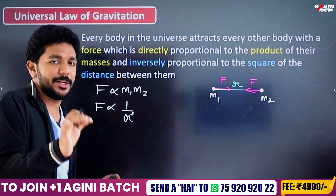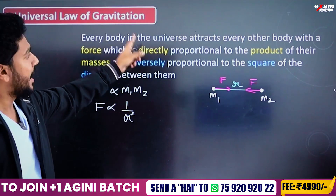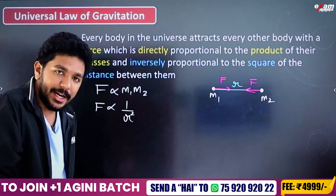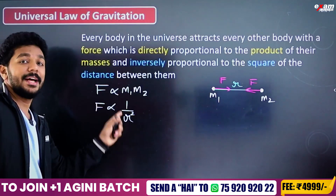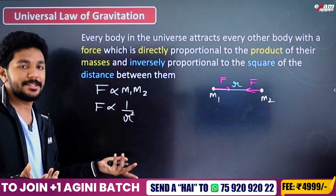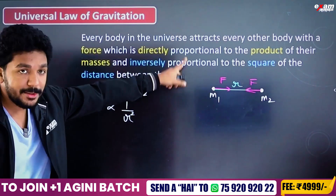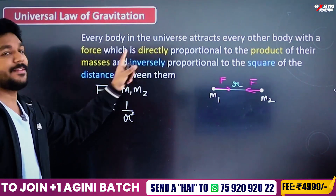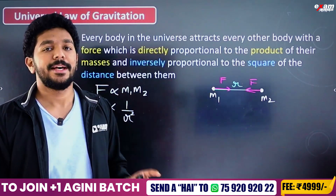How do you state the Universal Law of Gravitation? Every body in the universe attracts every other body with a force which is directly proportional to the product of their masses and inversely proportional to the square of the distance between them.